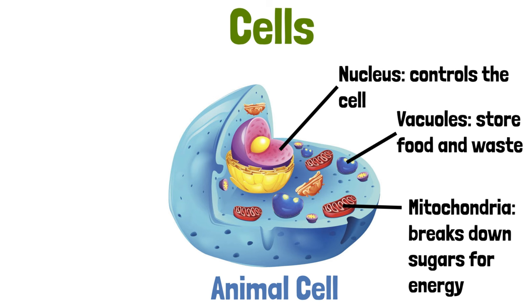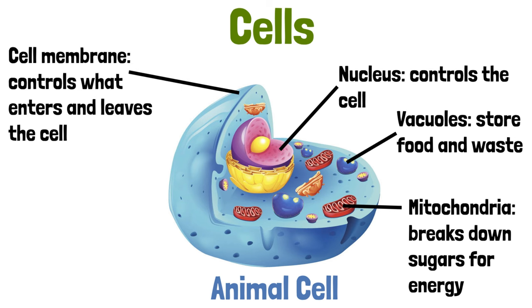Each animal cell is surrounded by a cell membrane. The cell membrane controls which substances enter and leave the cell. It also protects the cell.